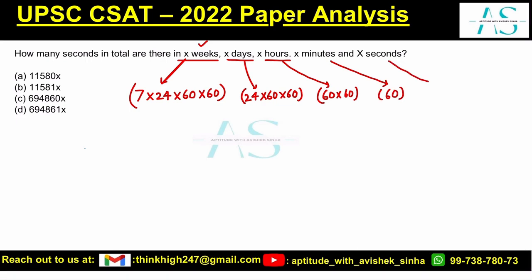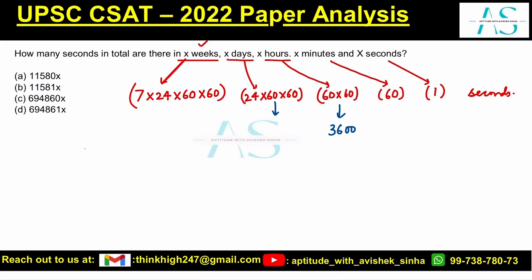A second is just one second. Chal, kyunki mein har jagah pe one rakh raha hoon — one second ka matlab ek hai. So this is what we have — all of these are in seconds. Ek second ka matlab ek hai, so this is 24 into 60 into 60, which equals 86,400.